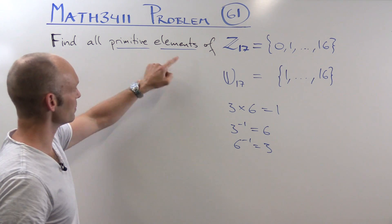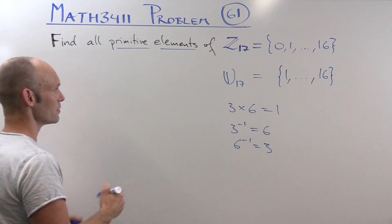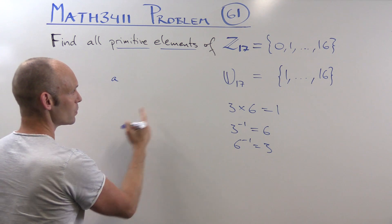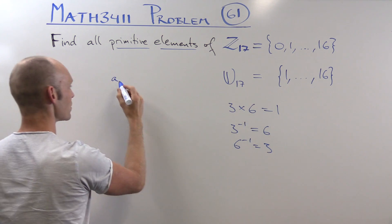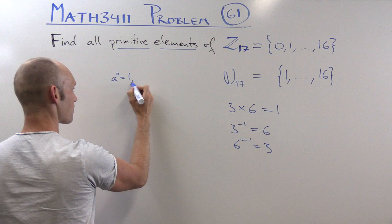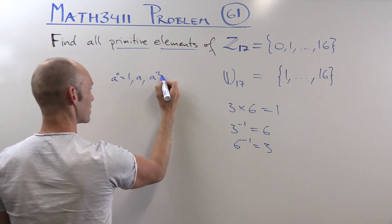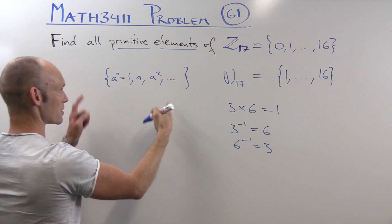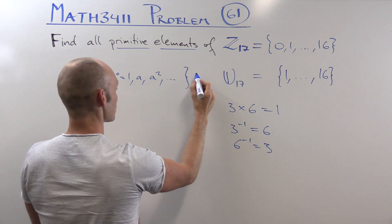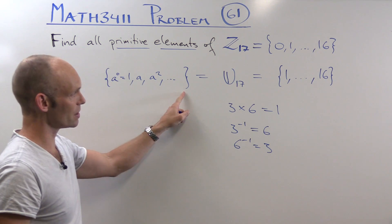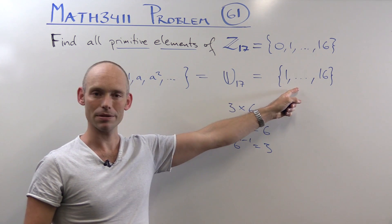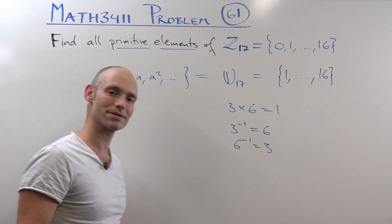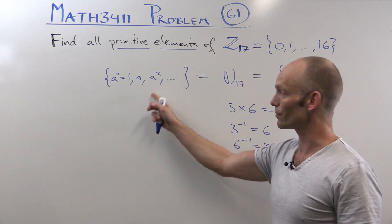So if we want to find a primitive element — let's call it a — then we get the set of units by taking a to the power of 1, a, a squared, and so on. Keep taking powers until you get that it cycles back. If all of those powers are equal to the set of units, then we say that a is primitive. That's the definition of a primitive element.